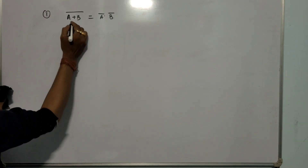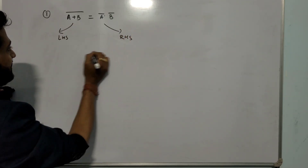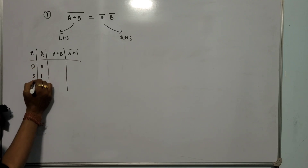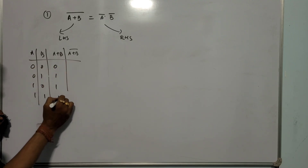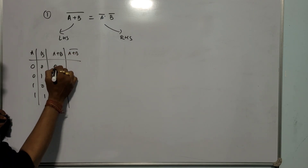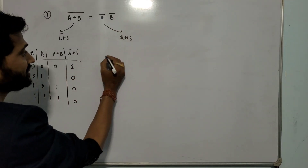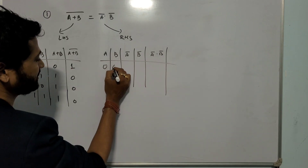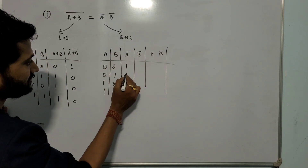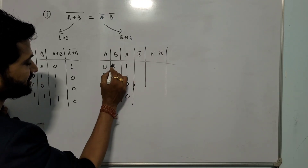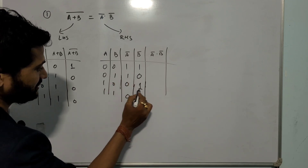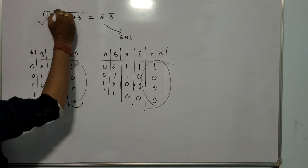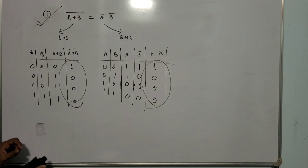To verify the first De Morgan theorem, we compute LHS and RHS. The input combinations are 0-0, 0-1, 1-0, 1-1. The OR output A plus B gives 0, 1, 1, 1; its bar gives 1, 0, 0, 0 - that is the LHS. For RHS, A bar is 1, 1, 0, 0 and B bar is 1, 0, 1, 0; multiplying gives 1, 0, 0, 0. LHS equals RHS, confirming (A plus B) bar equals A bar times B bar.